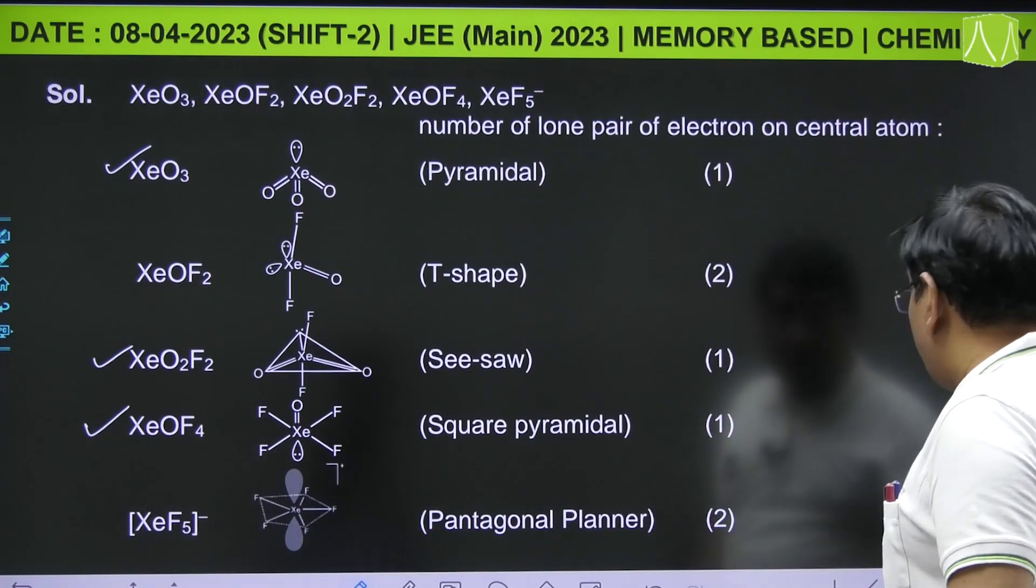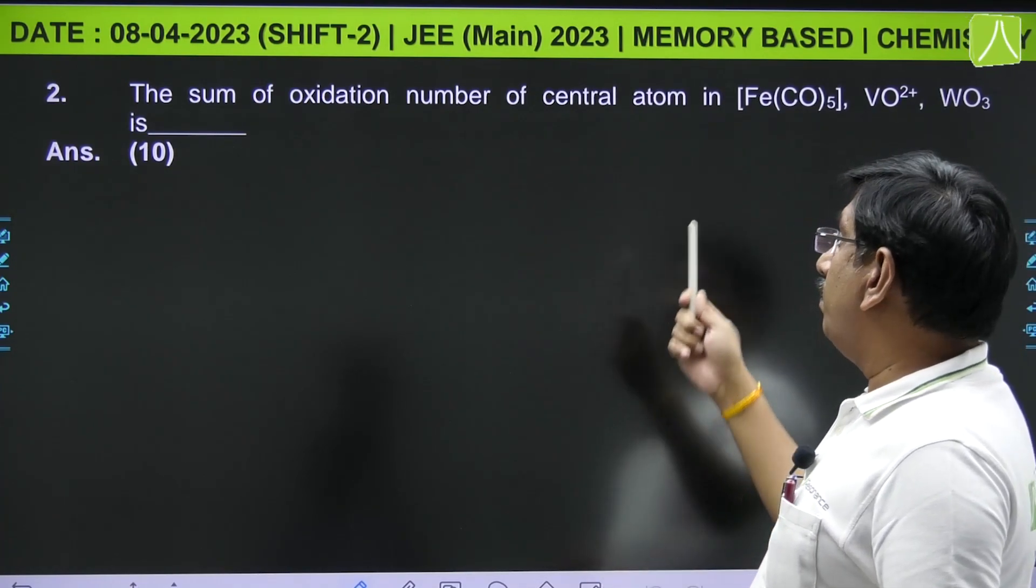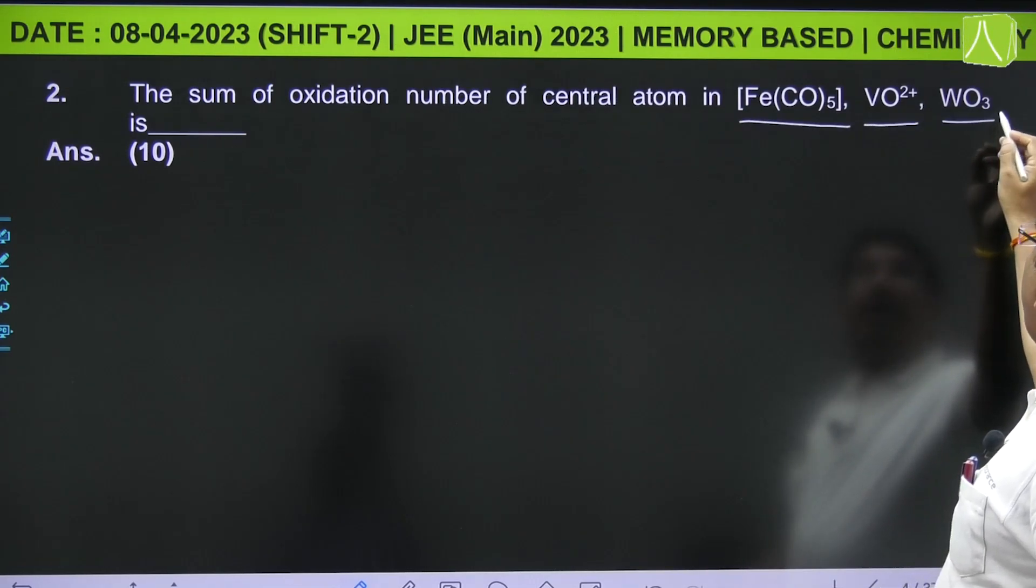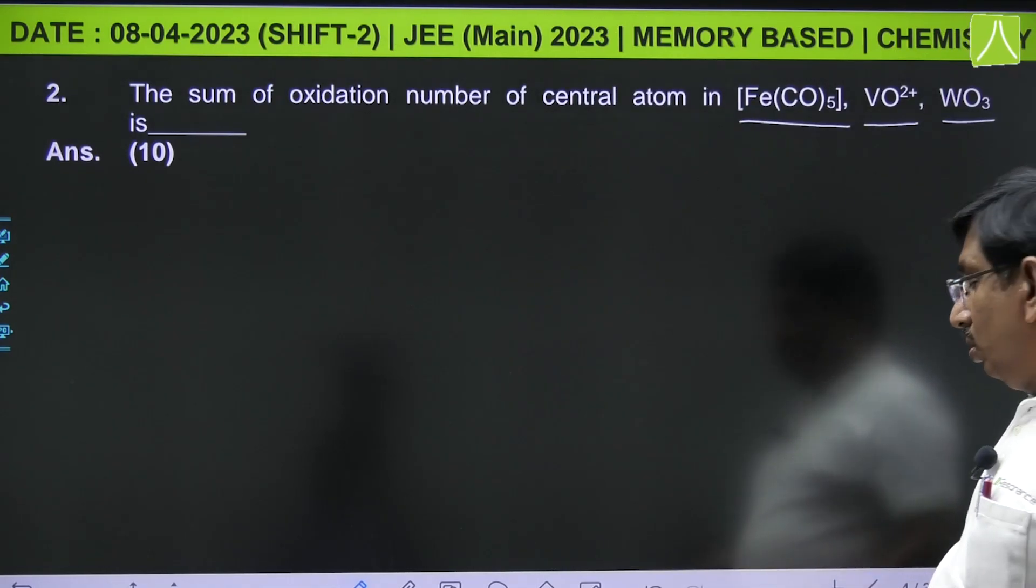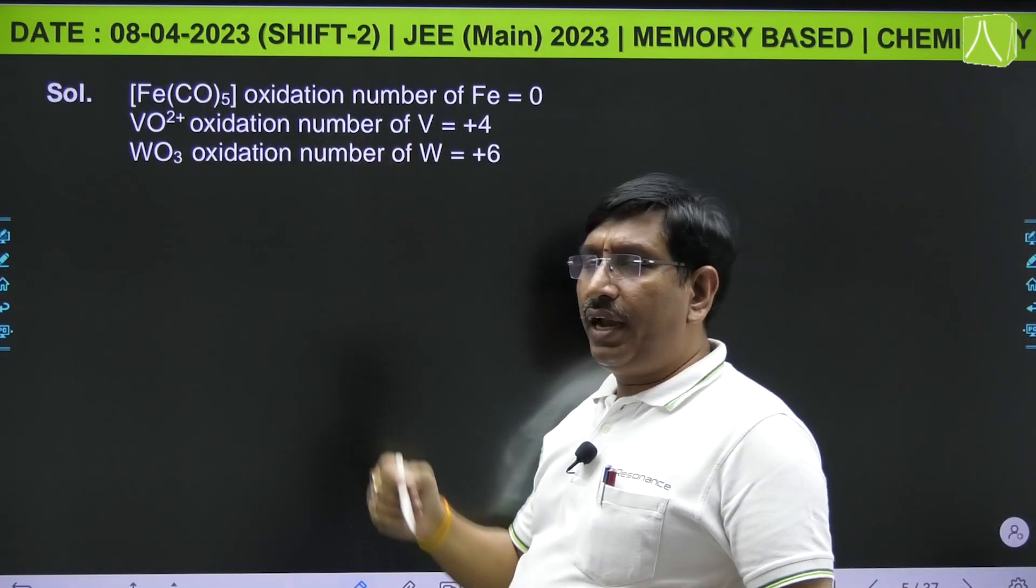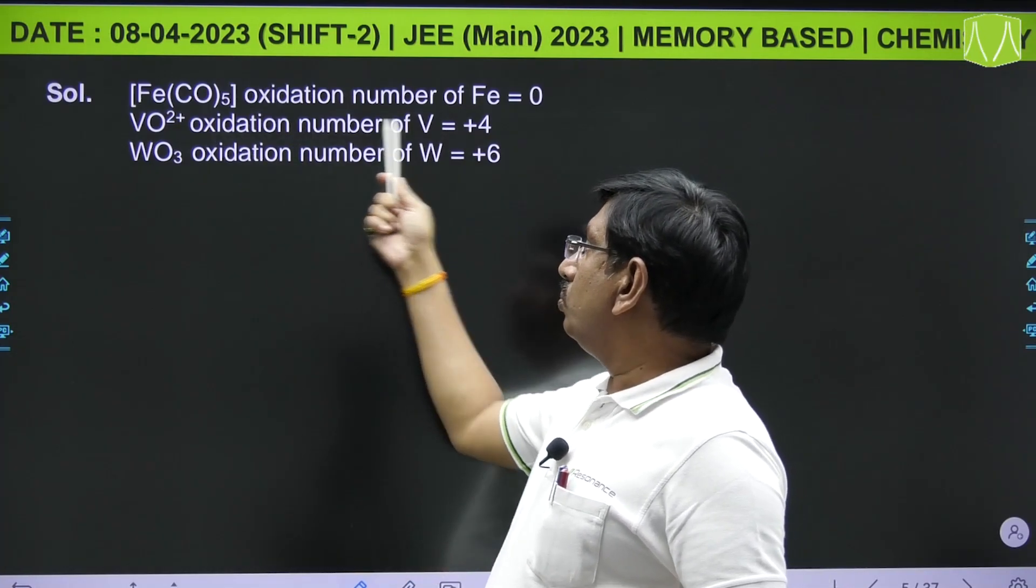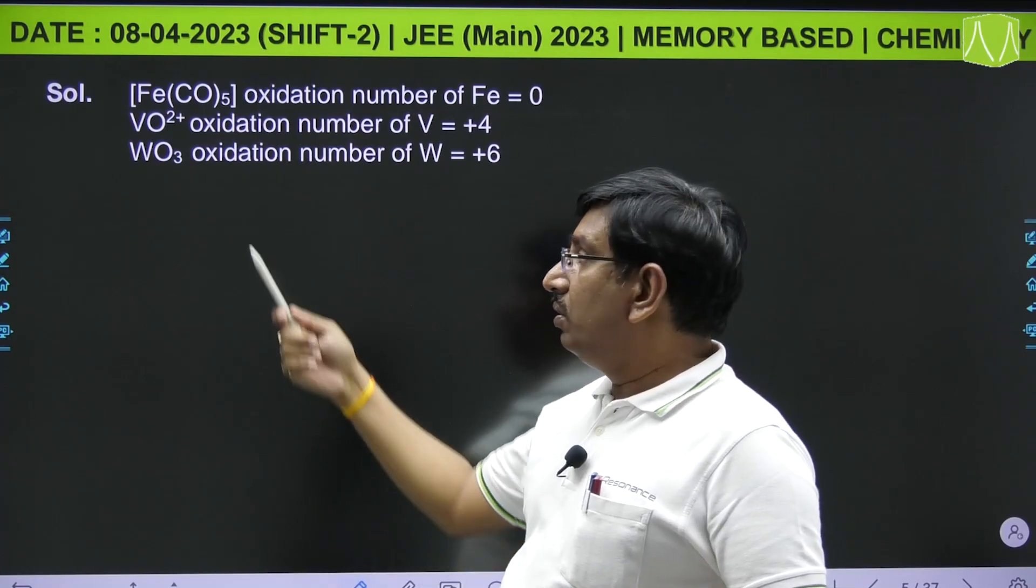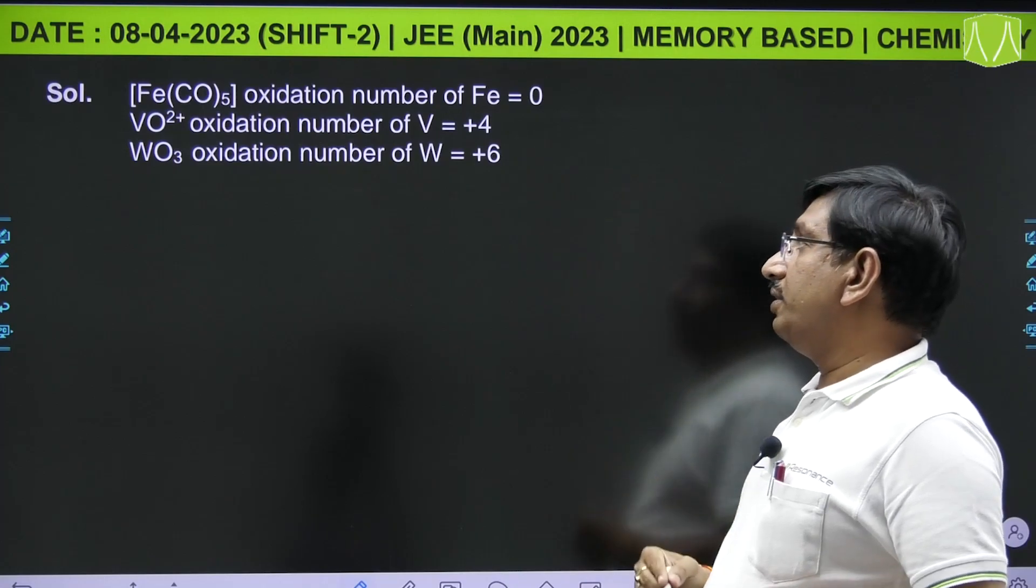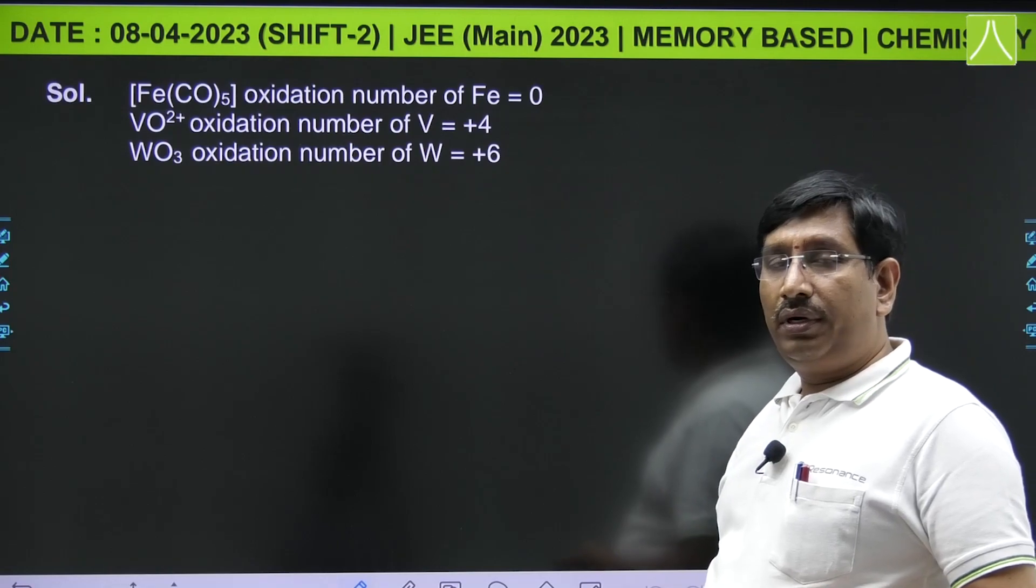Next: the sum of oxidation numbers of central atom in Fe(CO)₅, VO₂⁺, and WO₃. In iron pentacarbonyl, carbonyl is neutral ligand so iron has zero oxidation number. In VO₂⁺, vanadium has +4 oxidation number, and in tungsten trioxide, tungsten is having +6 oxidation number. So the total is equal to 10.